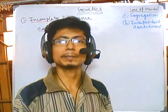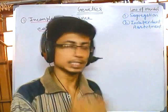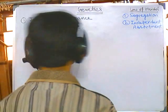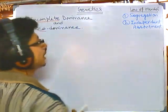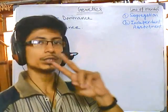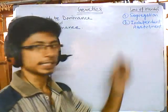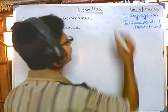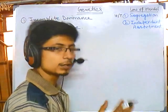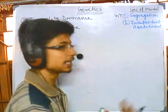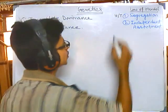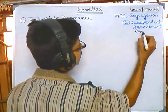Let us first talk about the Mendelian way of inheritance. According to Gregor Mendel, each genetic inheritance pattern should follow two different laws. One is the law of segregation, which is simply the coin flip or head-and-tail model. The other is independent assortment, meaning different traits assort independently without interfering with each other.